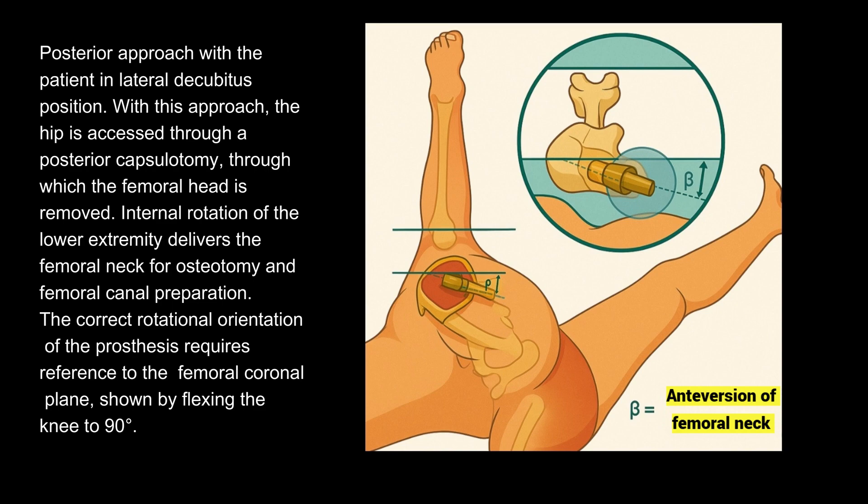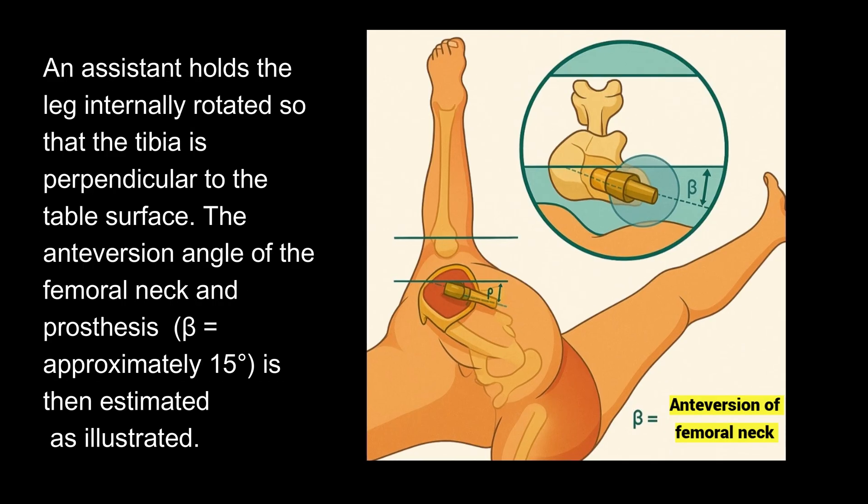The correct rotational orientation of the prosthesis requires reference to the femoral coronal plane, shown by flexing the knee to 90 degrees. An assistant holds the leg internally rotated so that the tibia is perpendicular to the table surface.